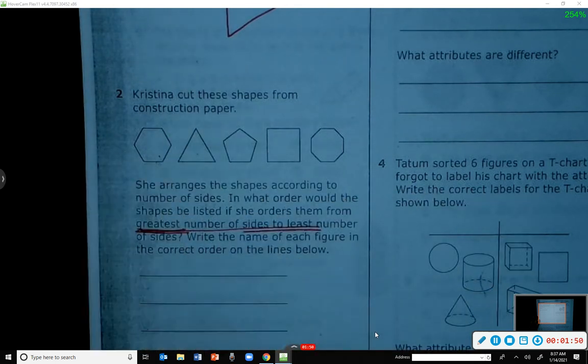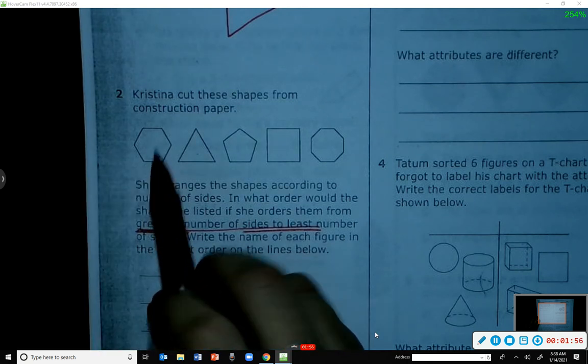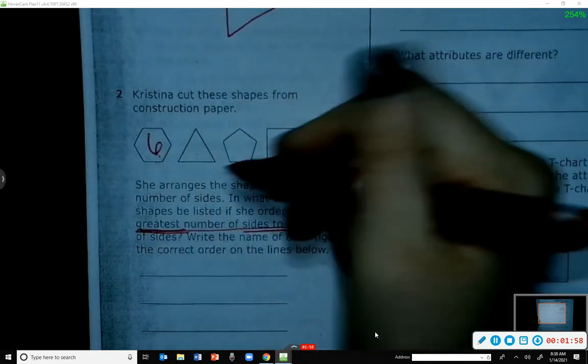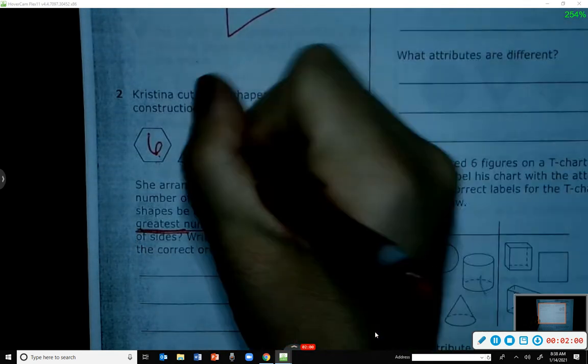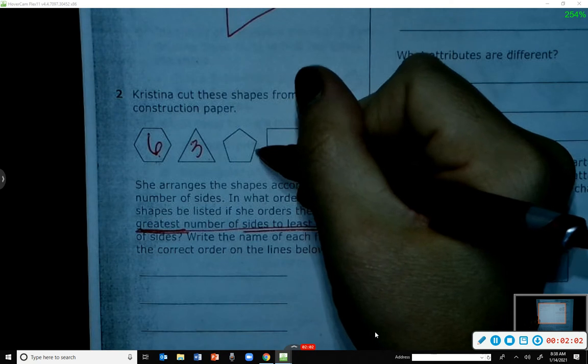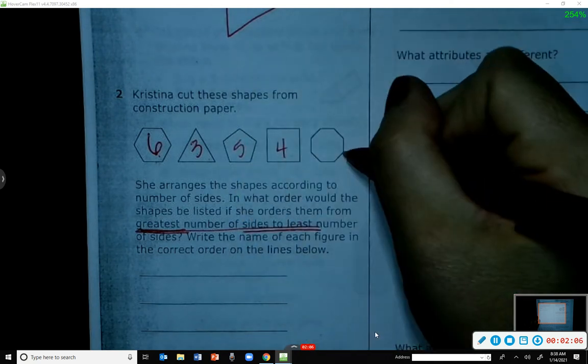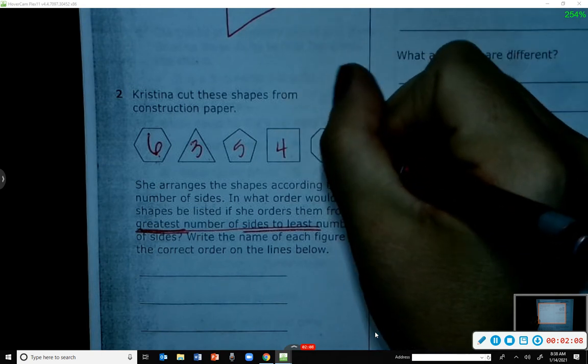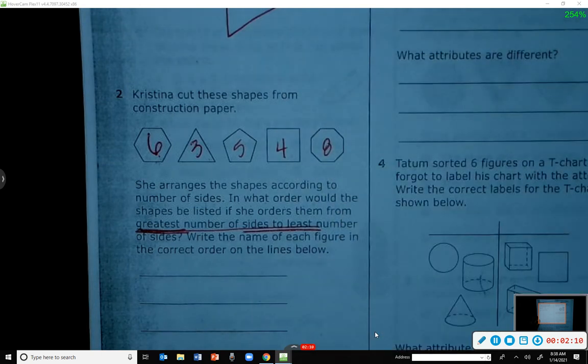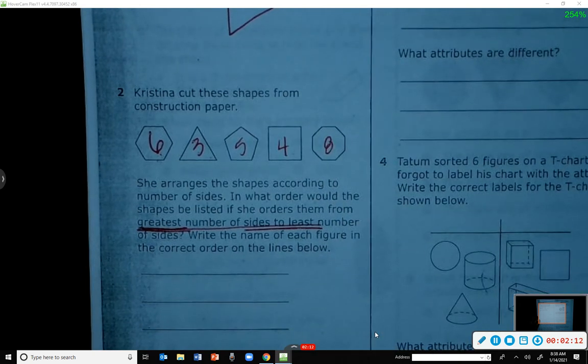We need to make sure we start with the greatest number of sides. So let's count. How many sides is this one right here? Six. The second one? Three. Here? Four. Eight.